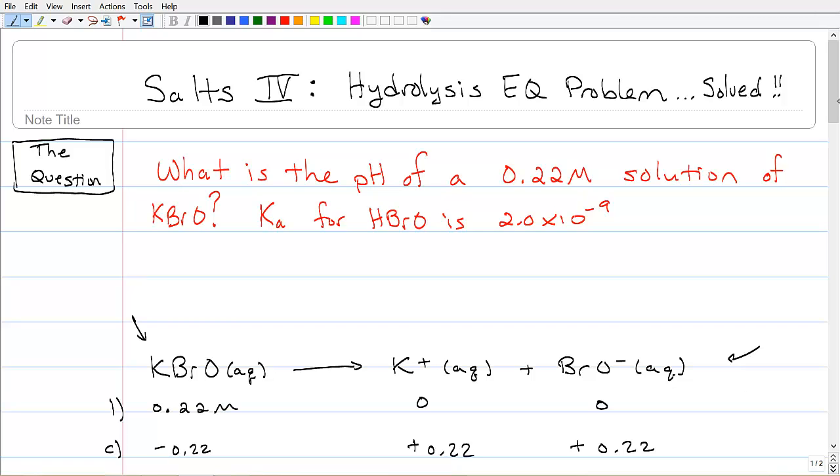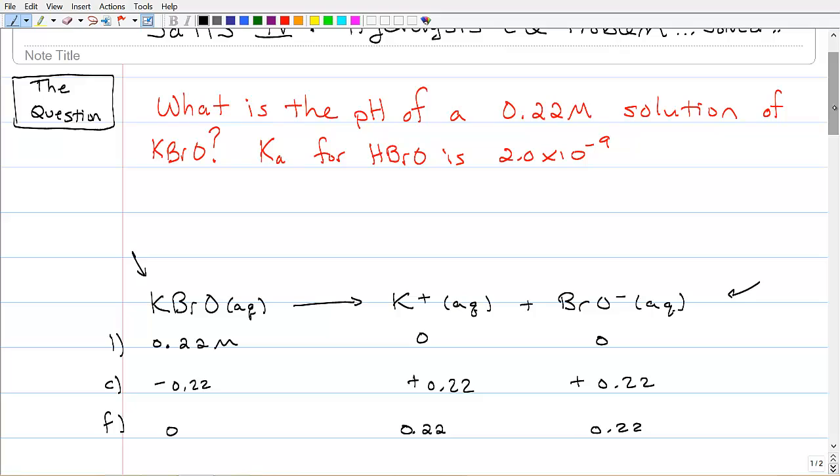What is it going to look like when we're finished? We're going to start with 0.22 molar of the KBrO, but we did not put any of the ions in there. So if we let this thing dissociate 100%, that means all of the KBrO will break down. And we know that our X is going to be negative 0.22. That means our X for the K plus and the BrO minus is also going to be positive 0.22.